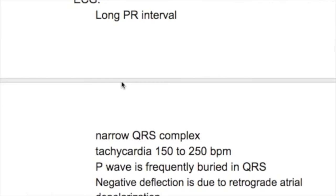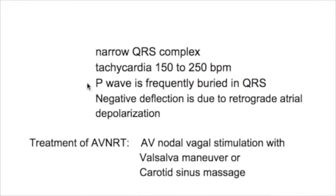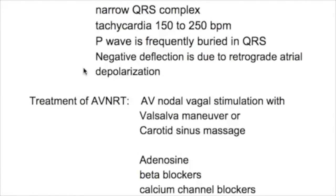The ECG in AVNRT shows a long PR interval, narrow QRS complexes, and tachycardia rate of 150 to 250 beats per minute. The P wave is frequently buried in the QRS and gives a negative deflection due to retrograde atrial depolarization.